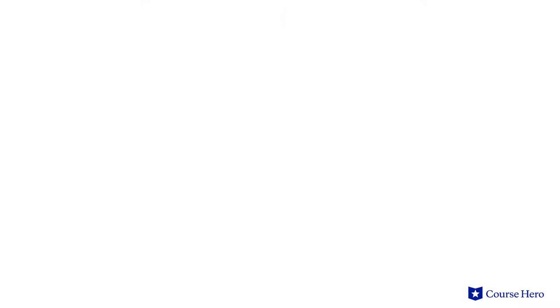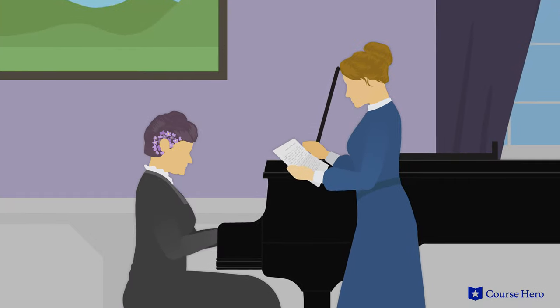Edna calls on her independent woman friend, Mademoiselle Reisz, who reveals Robert sent her a letter asking about Edna. Edna feels slighted that Robert didn't send her a letter too, but she's eager for news of him. Edna tells Mademoiselle Reisz she is becoming an artist, and the pianist tells her an artist must be courageous.